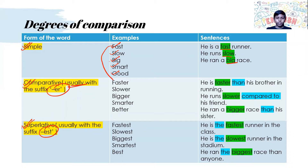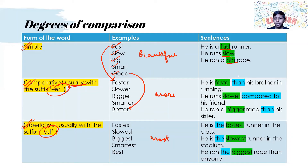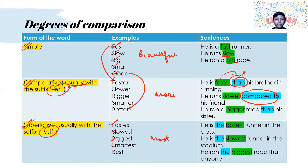Fast plus -er becomes faster. Slow plus -er becomes slower. Big becomes bigger. Smart becomes smarter. And good becomes better — it's not gooder, but better. And beautiful becomes more beautiful and most beautiful — it won't be beautifuler. So he is faster than his brother in running. After the comparative form, we use than or compared to. He runs slow compared to his friend. He ran a bigger race than his sister. The superlative forms are fastest, slowest, biggest, smartest, and best — better becomes best, not betterer. And beautiful becomes most beautiful.